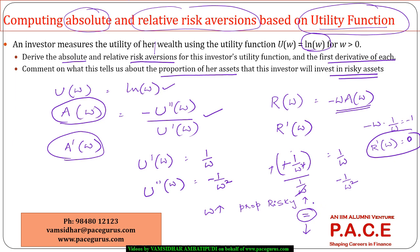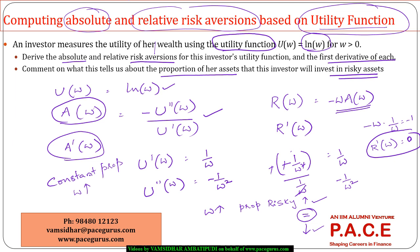If R dash of w were positive, the investor would have increasing relative risk aversion. If it were negative, the investor would have decreasing relative risk aversion. Since it is 0, the investor with a log utility function has constant relative risk aversion, meaning she will invest a constant proportion in risky assets even as her wealth keeps increasing — not an increasing or decreasing proportion.